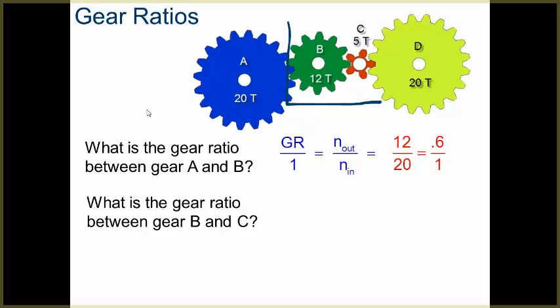If I want to find the gear ratio between gear B and gear C, I'm going to do the same thing since I know the number of teeth. My gear ratio is my number of teeth out over my number of teeth in. In this case, it's 5 teeth on my output gear, 12 teeth on my input gear, where I get a 0.42 gear ratio.